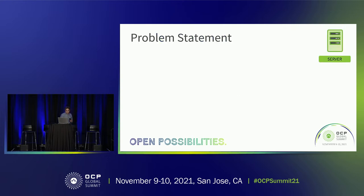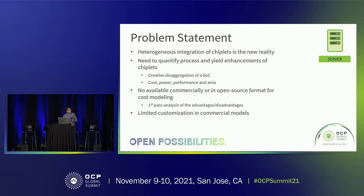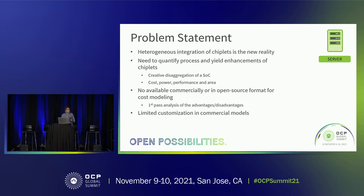What's the problem statement? It's all about economics. One of the comments earlier today was: does it make financial sense — should we do chiplets? That's a big question that keeps coming up. Heterogeneous integration is the new reality, but how do we quantify the benefits and account for trade-offs — process, yield, known good die — and translate that into power, performance, and area? We looked for commercially available tools, but they're not versatile or customizable enough for what we wanted.